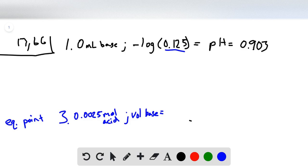To get the volume of base needed, we divide 0.0025 by the concentration of base, which is 0.150, and this equals 16.67 milliliters. Our pH, since it's a strong base and strong acid, is going to be equal to 7.